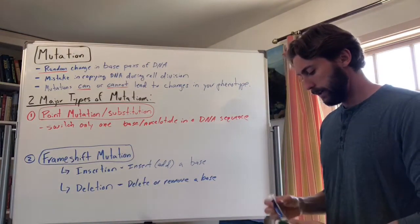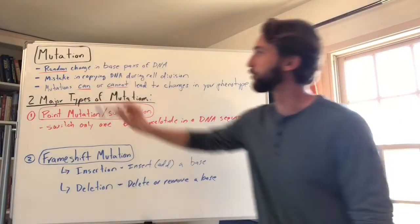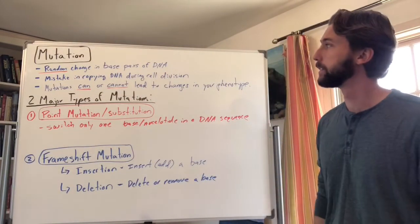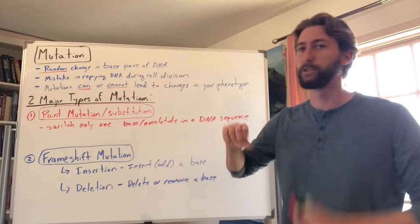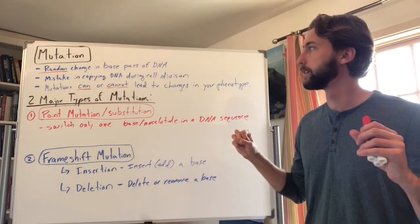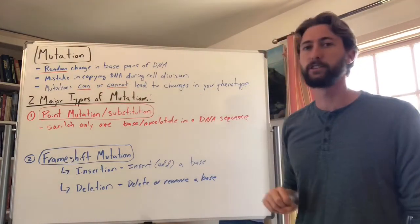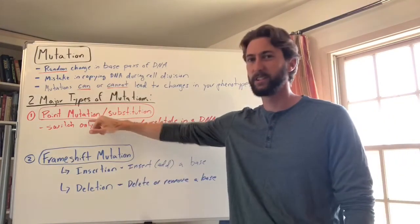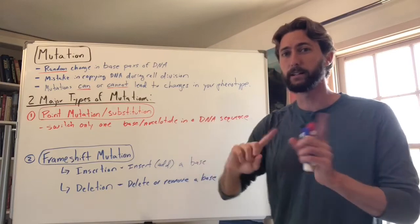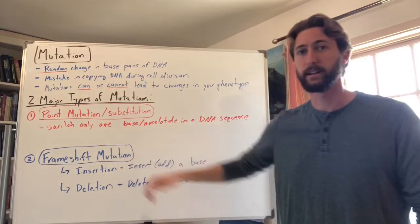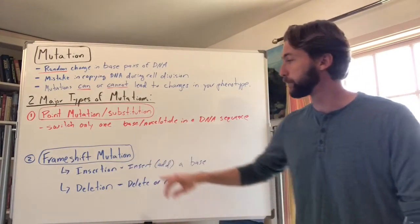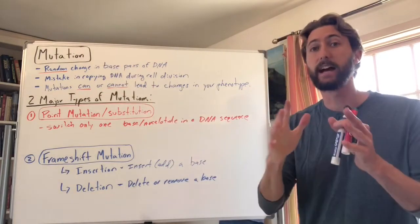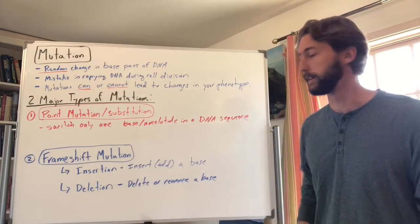Quick recap: a mutation is a random change in the base pairs of your DNA — those letters A, T, C, and G. It usually happens during a mistake when your cells divide in mitosis and meiosis. Mutations can or cannot lead to changes in your phenotype. The two types are point mutations — only switch one base — and frame shift mutations, which have big consequences when you insert or delete a base.